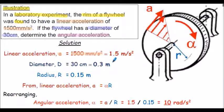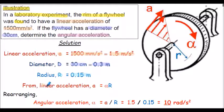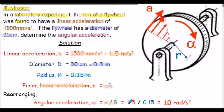The linear acceleration a is 1500 mm/s², which divided by 1000 gives 1.5 metres per second squared. The diameter D is 30 centimetres, or 0.3 metres, giving a radius R of 0.15 metres. From the formula a = αr, rearranging for alpha gives α = a / r = 1.5 / 0.15, so the angular acceleration is 10 radians per second squared.